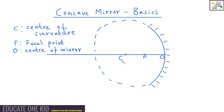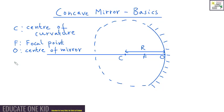Since C is the center of the circle, and O is the center of the mirror, we can see that the distance from the center of the circle to the circumference is just the radius. Since O lies on the circumference of the circle, the distance from C to O is the radius of the circle, and of course we call that R.